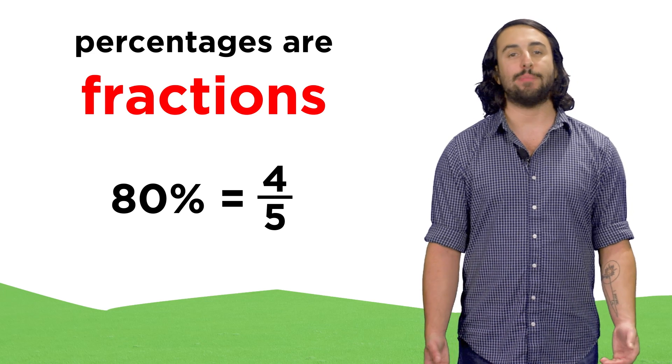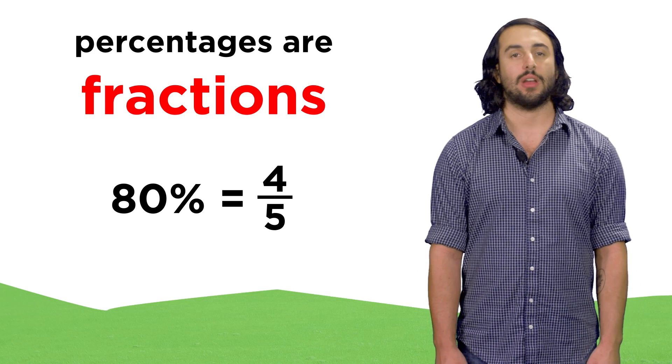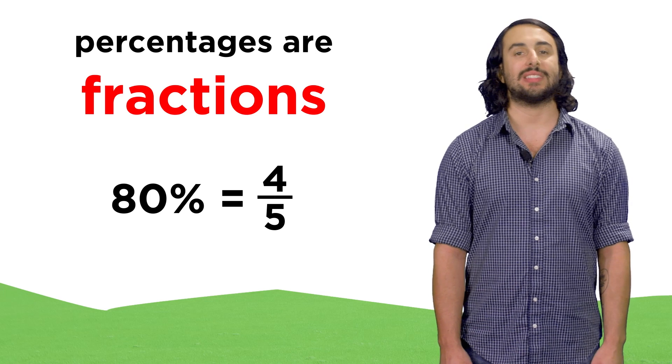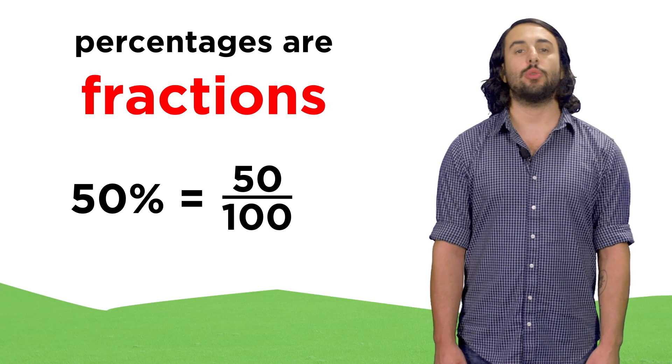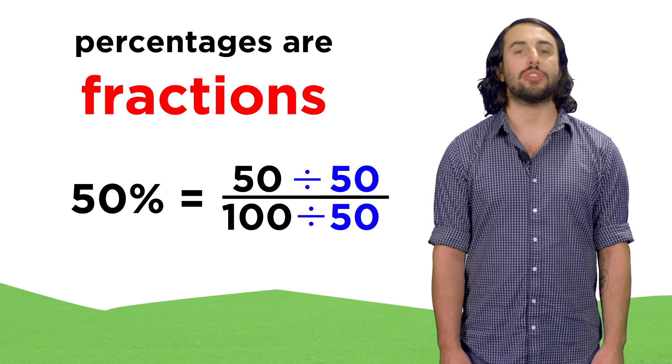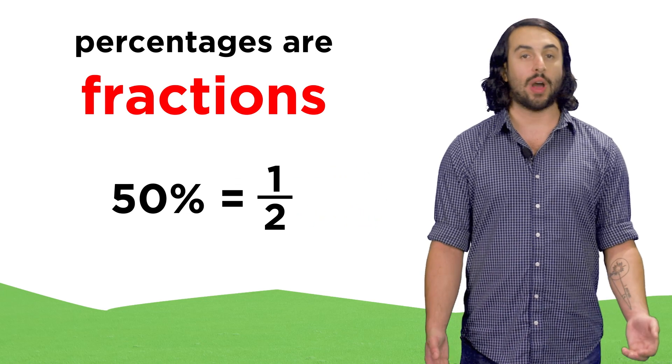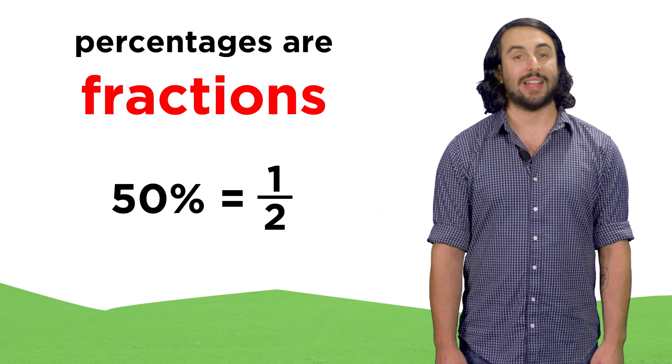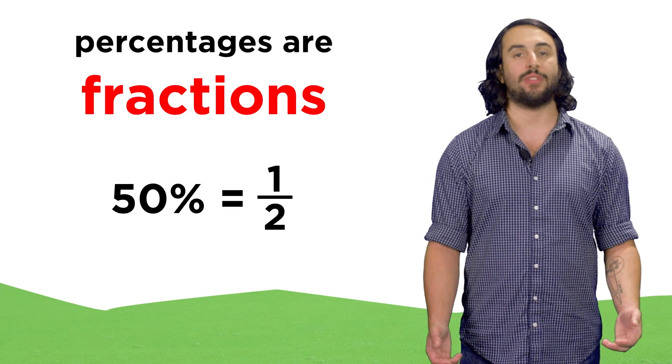This means that eighty percent and four fifths are equivalent, they mean the same thing. Moving to another example, fifty percent is fifty one hundredths, and dividing both numbers by fifty, we get one half. This makes sense, as fifty is half of a hundred.